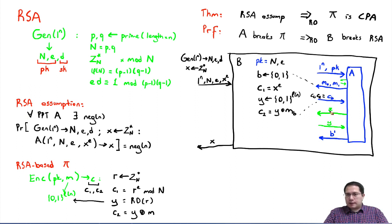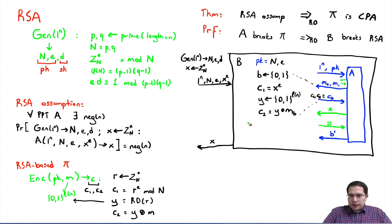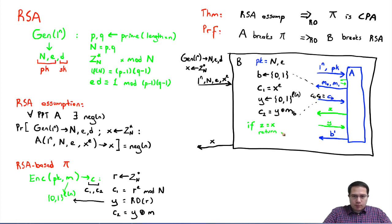Now the interesting part comes: what if the adversary makes a random oracle query? There are three options. The first option: if z^e equals x^e, then the random oracle of x needs to be this y. So we return the y value we chose earlier as the response.